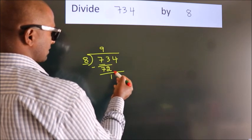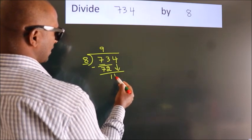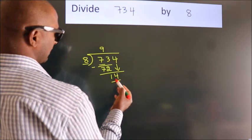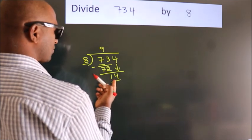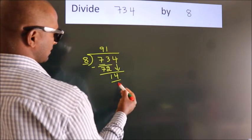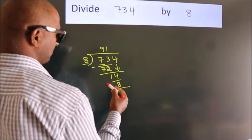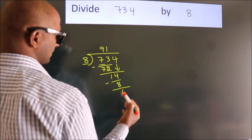After this, bring down the beside number. So 4 down, so 14. A number close to 14 in 8 table is 8 ones, 8. Now we subtract, we get 6.